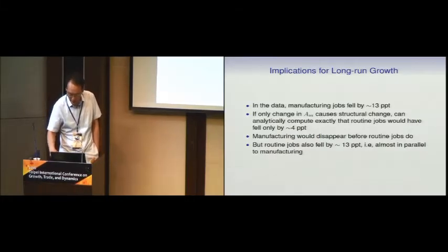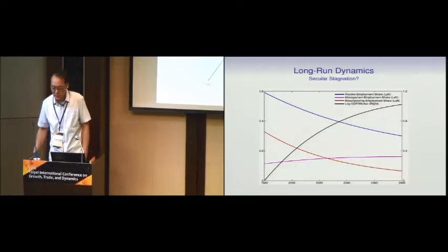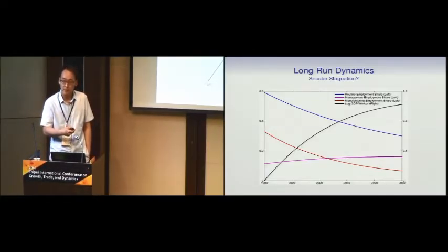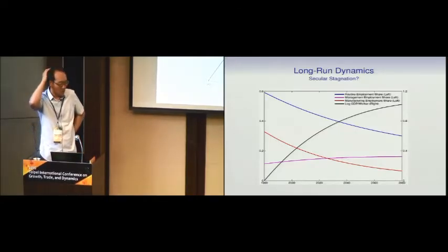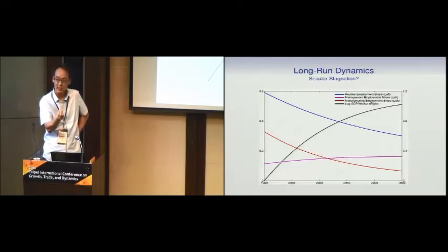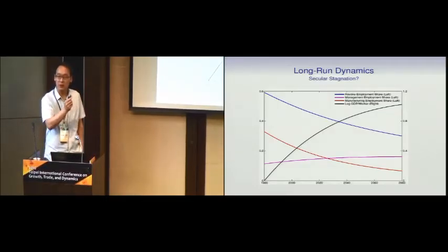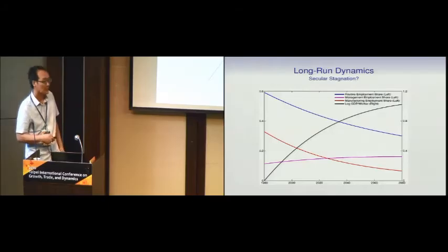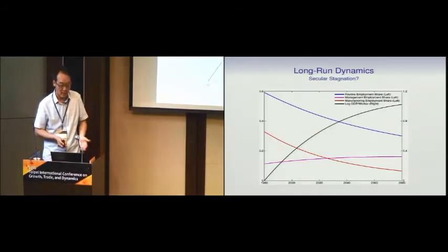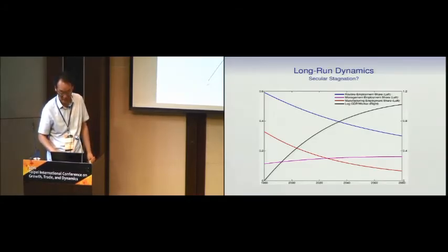Let me finish with one more picture on long-run dynamics. Assume some occupations are easier to improve in TFP — those are the routine jobs. But in the model, as those become more and more productive, their employment share decreases. So the most productive occupations are shrinking, meaning their contribution to aggregate TFP growth is actually falling over time. If things were growing at a constant rate, you'd see a straight line in log GDP per capita. But in this model, looking at the asymptotics, it's actually concave — the growth rate is slowing. This may be one way to think about secular stagnation: the growth rate of GDP per capita falling over time as a technology-based explanation.